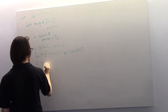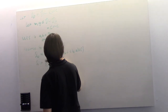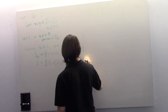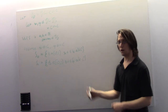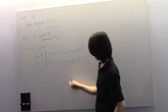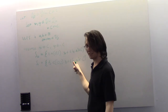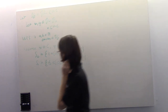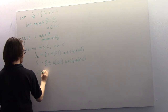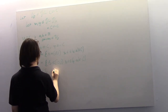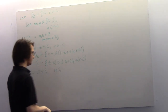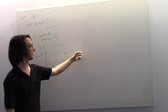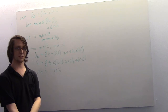S1 is the set of T in [0,1] such that X plus T times (Y minus X) is an element of minus C. Suppose T equals 1: X plus (minus X) is 0, and Y is in minus C by hypothesis. So 1 is an element of S1. More is true: 0 is an element of S-naught, and 1 is an element of S1.